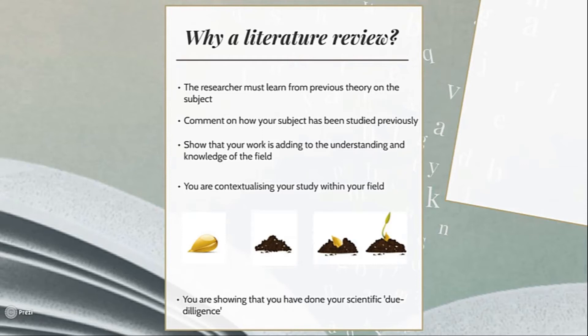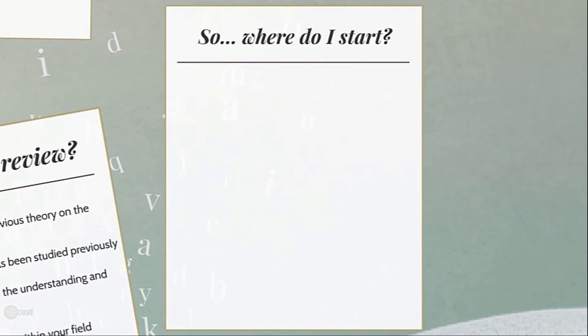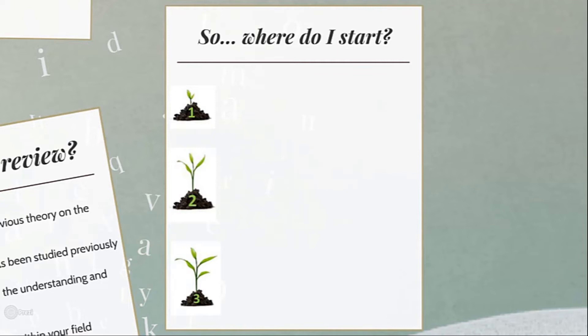Now that we understand why we do a literature review, where does one start? We're going to focus on three main phases. The first phase is reading, reading, reading — I can't overemphasize this. The reading part of a literature review is arguably the most important part of it altogether, but it takes a lot of time — a lot more than you might think. Because you're reading, you don't necessarily have something to show for it, so it can feel like a tedious task that never ends.